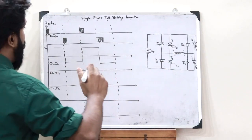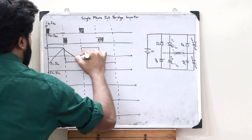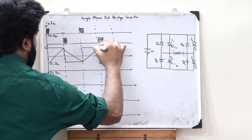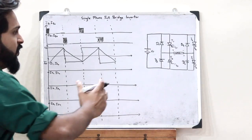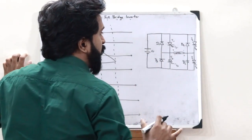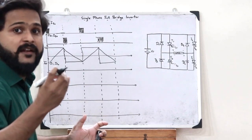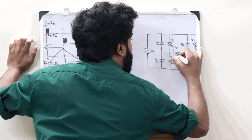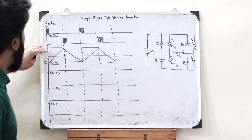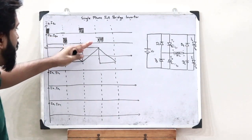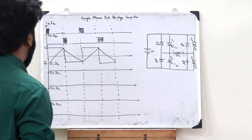Next, let us see the output current across the load. We obtain an output current waveform like this, because the load taken here is assumed to be an RL circuit — that is, a resistor and an inductor. Therefore, this is the kind of current waveform we obtain across this particular load.